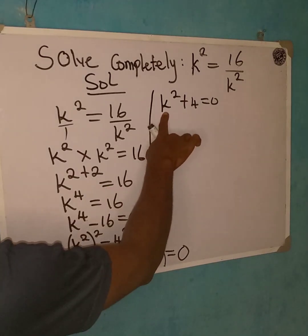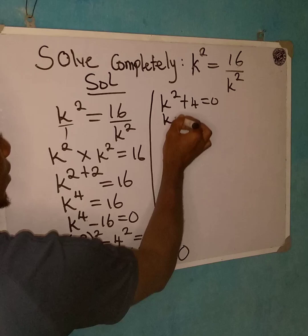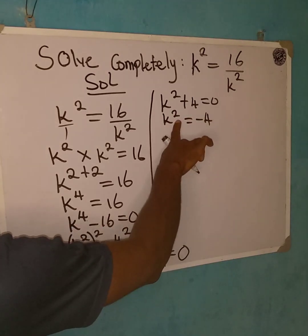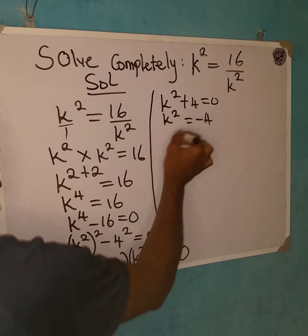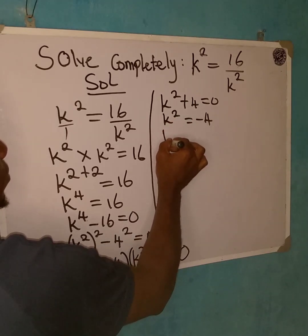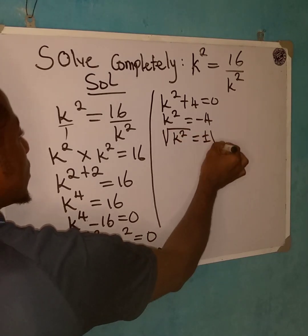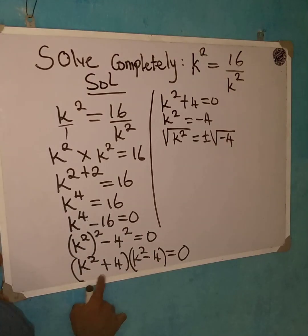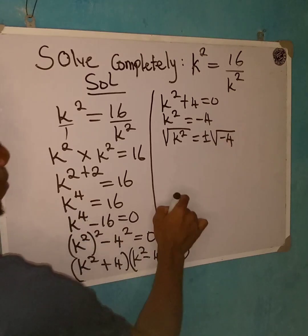And I'll say k squared plus 4 is equal to 0. And from here, do not forget that I can take this to the other side. So I have k squared is equal to minus 4. And then, what I need to do now is to take the square root of both sides. So I'm going to have square root of k squared to be equal to a positive or negative square root of minus 4.